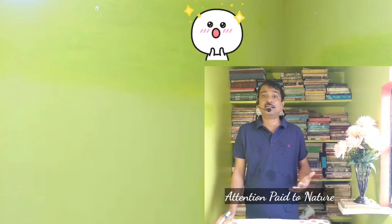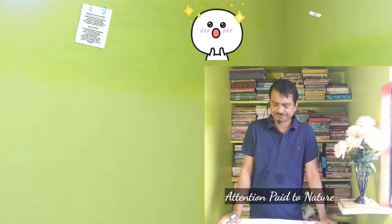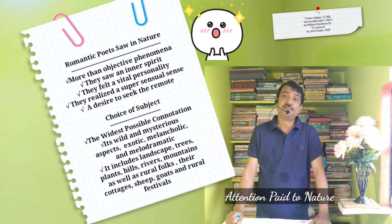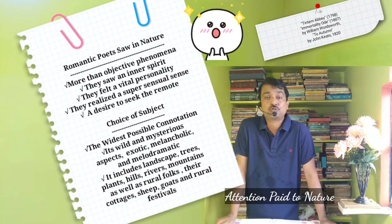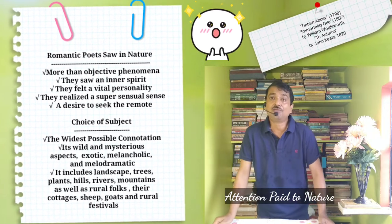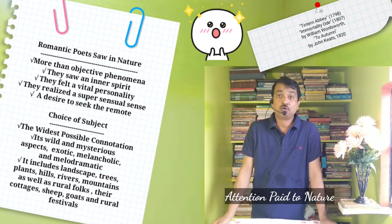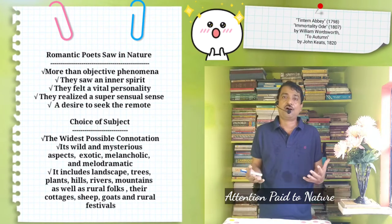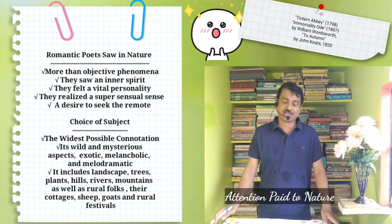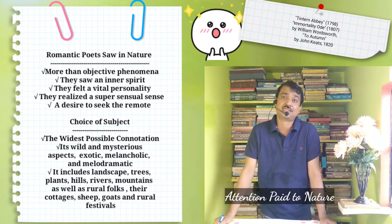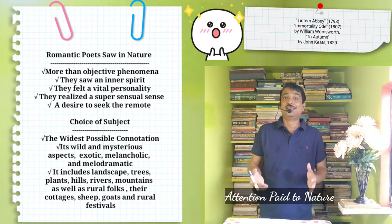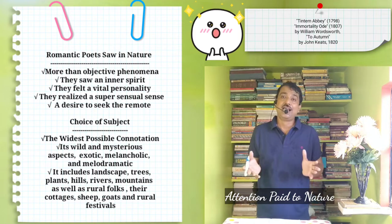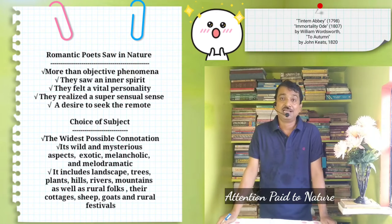Wordsworth and Shelley saw in nature something more than mere objective phenomena. They saw an inner spirit, felt a vital personality, and realized a supersensual sense in nature. Along with the subtle perception of natural beauty, they grew a desire to seek the remote and mysterious, sowed with the hedge of a strangely mysterious atmosphere. It is this which led Coleridge to lose himself in the supernatural atmosphere of the ancient Mariner, or the haunting mystery of Kubla Khan, and which made Keats construct with intense imaginative force the medieval magic world of La Belle Dame Sans Merci.